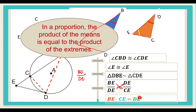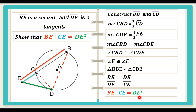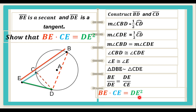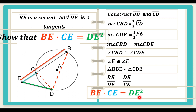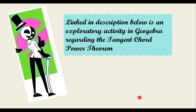Let us put together all our statements and the original figure. We have that BE is a secant and DE is a tangent, and we were asked to show that BE times CE is equal to DE squared. With our statements, we can clearly say that we were able to show correctly that BE times CE — the secant multiplied by its outer part CE — is equal to the square of the tangent. Thus the proof is complete.